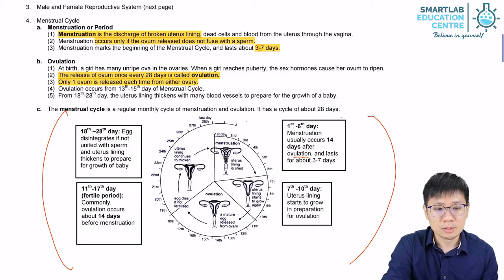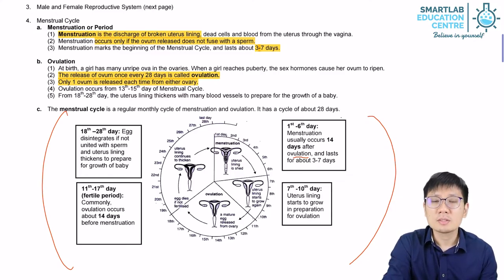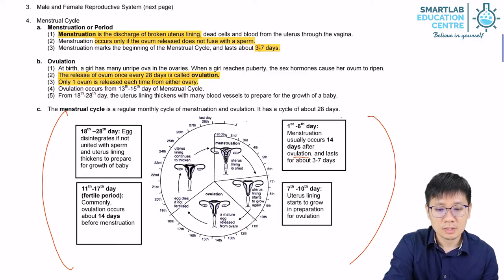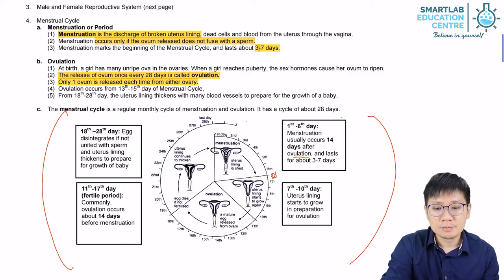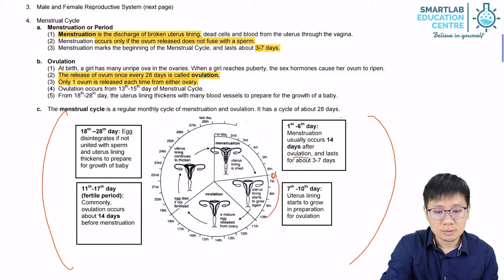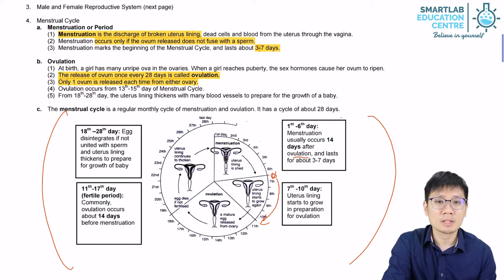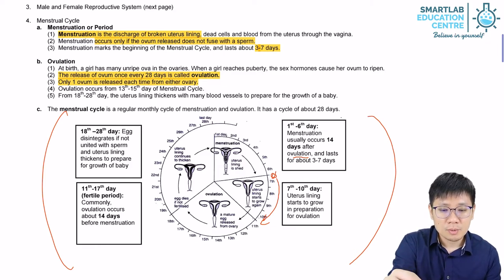We will assume a regular menstrual cycle of 28 days, though this may differ between individuals. After menstruation is done, the uterine lining will start to grow again and become thicker. During this period, the uterine lining will become richer in blood vessels. This is to prepare to supply nutrients and oxygen to the developing embryo and fetus. Once that stage is sufficient, ovulation occurs.